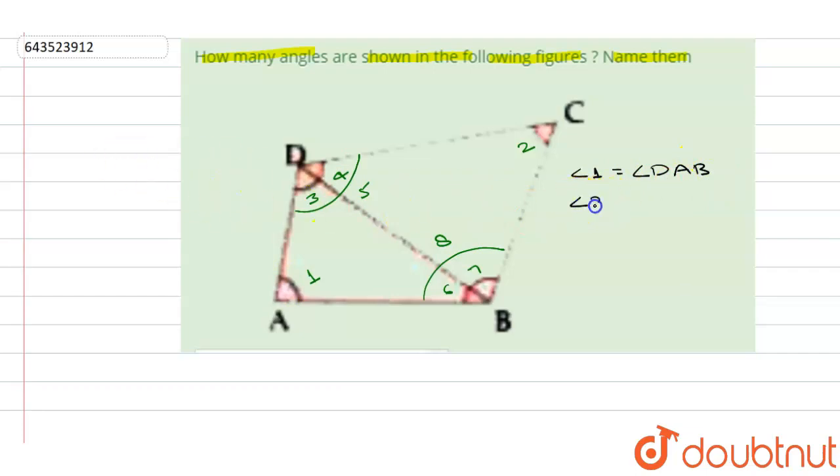Angle two will be written as, it is found by line CD and BC, so it will be angle BCD. Similarly, angle three can be written as, it is found by line AD and BD, so it will be angle ADB.